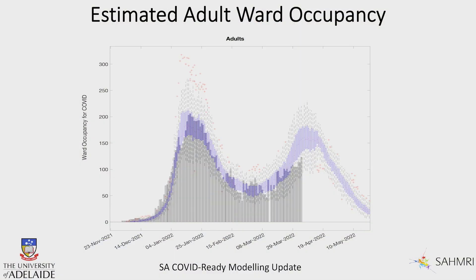The second graph shows the hospitalisation data, and the really good news is we're actually seeing fewer cases admitted to our hospitals in South Australia compared to what the model is predicting. Also note that the x-axis here reflects people admitted for COVID — not with COVID — so this doesn't include incidental COVID; it's only people being admitted for their actual symptoms of COVID.